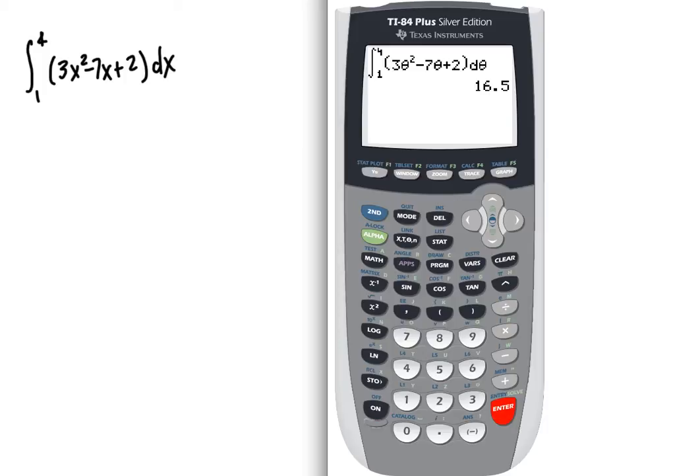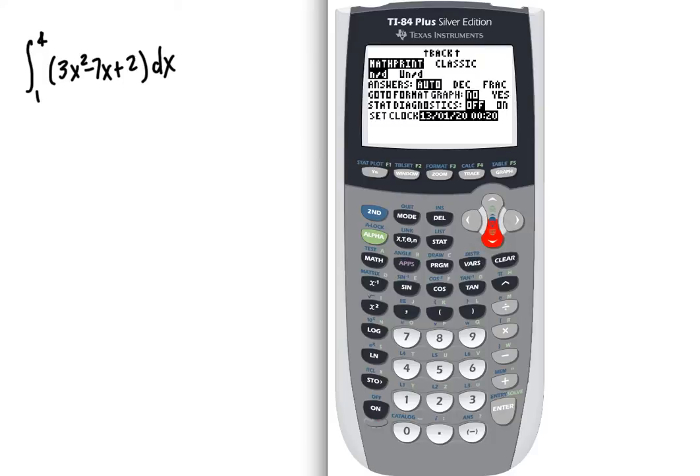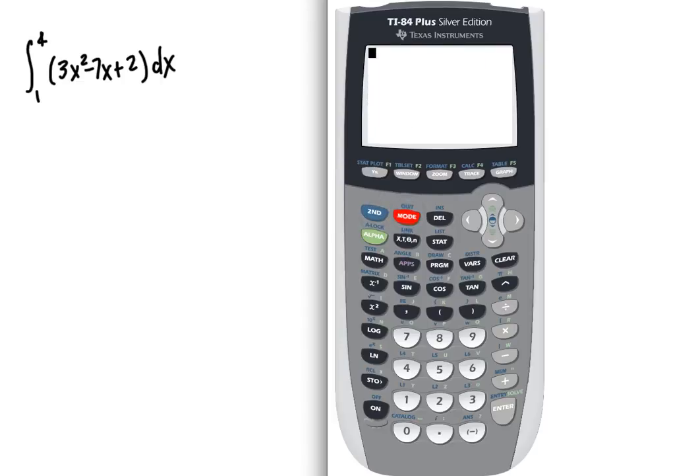And that's how you can use the math print. If you're on an 83, it's possible that you don't have math print. In fact, it's likely that you don't have math print, so you would have a look that would be similar to this. And it would be the same steps. So you would hit the math key and choice nine, which brings up our integral.